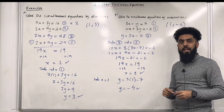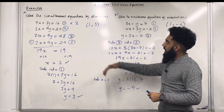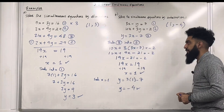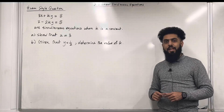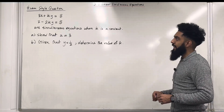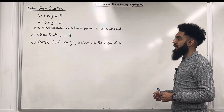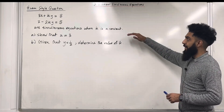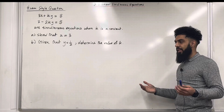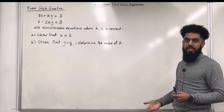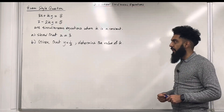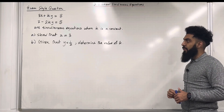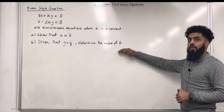So these are the two different techniques of solving simultaneous equations: elimination and substitution. Here is an exam-style question. 3x plus ky is equal to 8; x minus 2ky is equal to 5. These are simultaneous equations where k is a constant. k could be 0, positive, or a negative constant. Part A: show that x is equal to 3. Part B: given that y is equal to a half, determine the value of k.